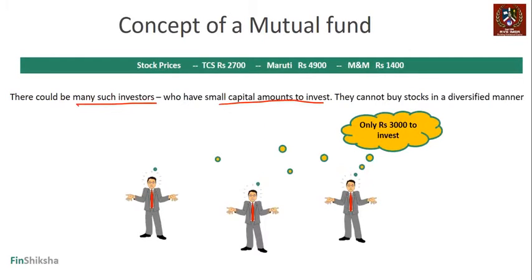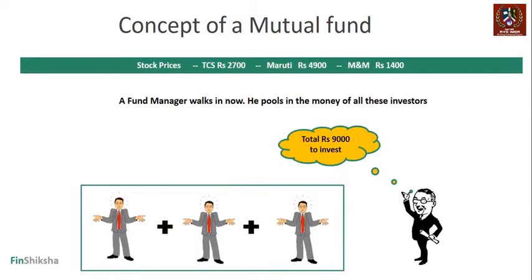Does that give us a solution? What if there is a fund manager — a gentleman who can boast a lot of expertise around stock markets — who walks in and says, 'Why don't I pool the funds you give me? I will create a pool of money, combining 3,000 plus 3,000 plus 3,000, giving me 9,000 total to invest. I am an expert, I have tracked stock markets for a long time, and I think I can do a good job managing your investments.'